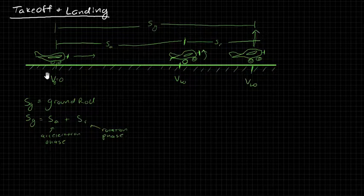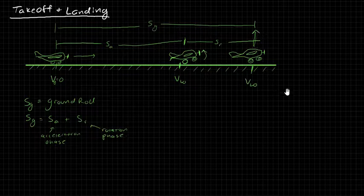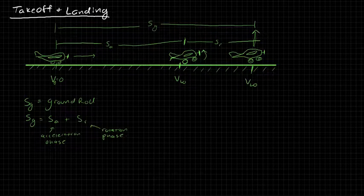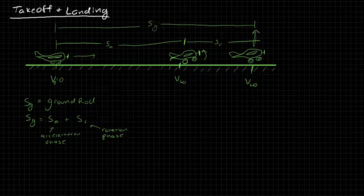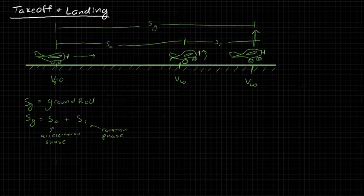Okay, let's come back to our image here that depicts the ground roll and takeoff. So we've talked a little bit about the acceleration distance, and we've come up with a closed form first cut approximation for the acceleration distance.